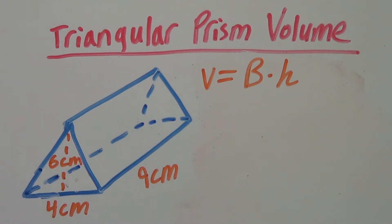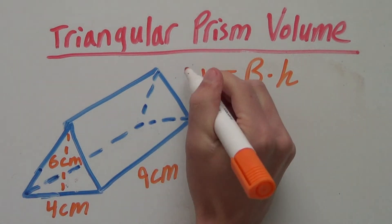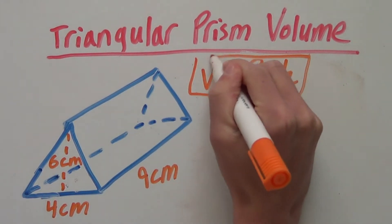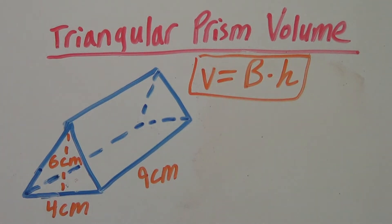A triangular prism looks like this and you find the volume using this formula which is volume equals base times height. Now, there are a few important things to know about this formula.